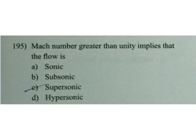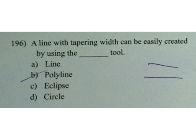A line with tapering widths can be easily created by using: A line, B polyline, C ellipse, D circle. B is the answer — polyline. When setting up a mechanical drawing in AutoCAD, the drafter should set the units to decimal.